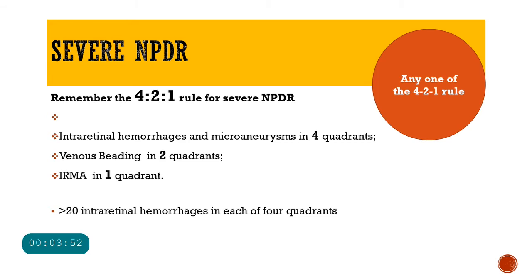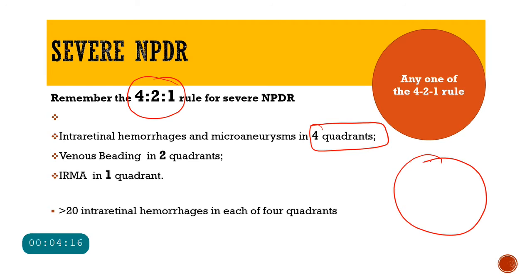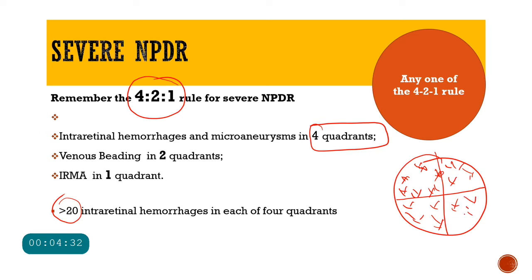For severe non-proliferative diabetic retinopathy, you must remember the 4-2-1 rule. The '4' stands for the presence of intraretinal hemorrhages and microaneurysms in all four quadrants — if I divide the retina into four quadrants, more than 20 intraretinal hemorrhages should be present spread across all four quadrants.